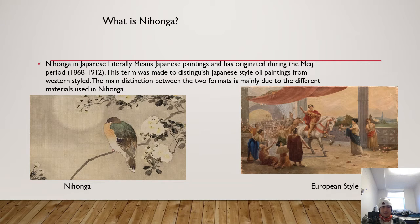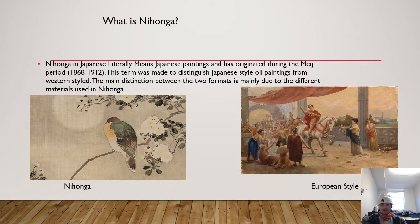Here on the left you can see an example of a photo of a bird — this is a Nihonga painting — and on the right is a European style painting. Even though they may seem the same in texture, they are very different because of the materials used and how these paintings were formulated.